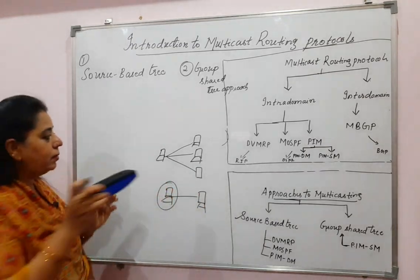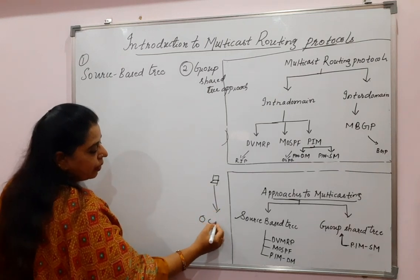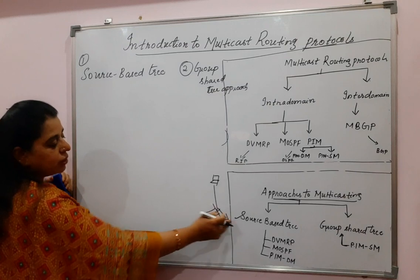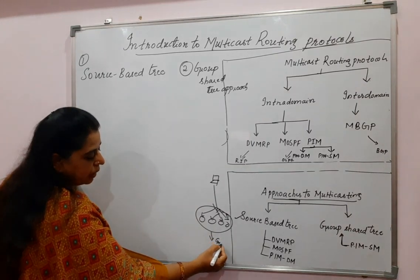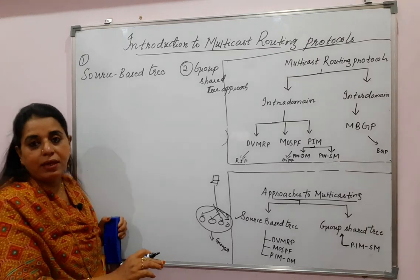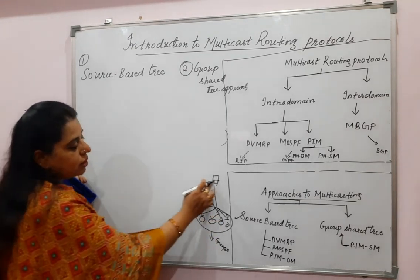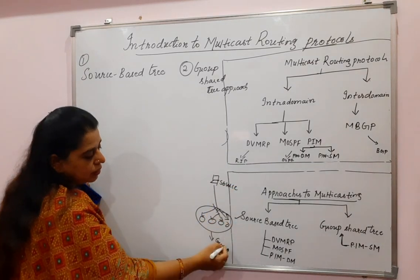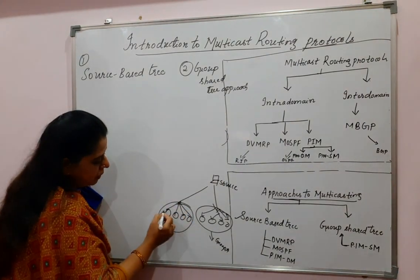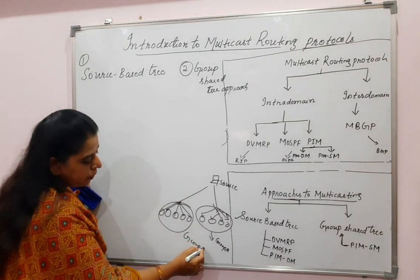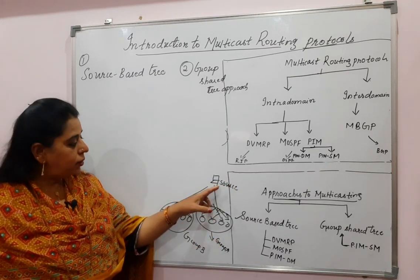For example, one source is sending a packet to multiple nodes forming group A, and there can also be a group B. The source needs routing paths to reach group A and group B. If there are other groups — C, D, E — there will be multiple groups, and there can also be multiple sources.